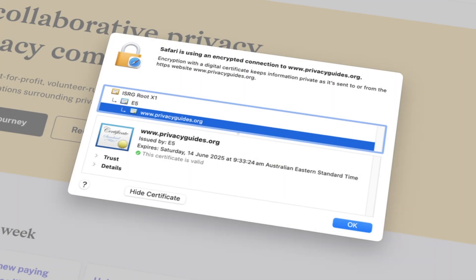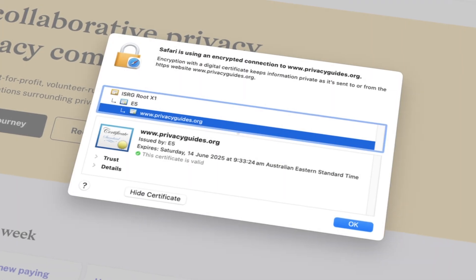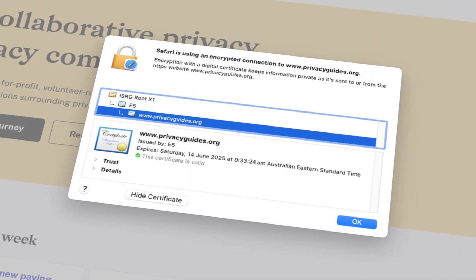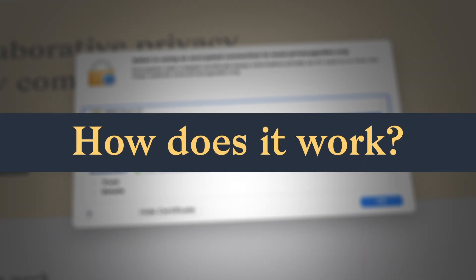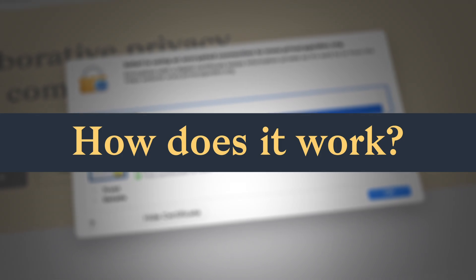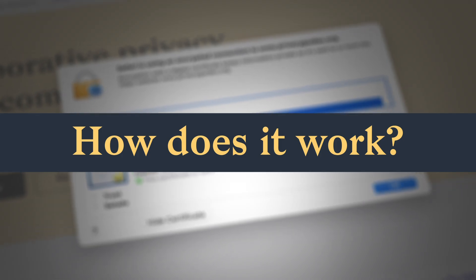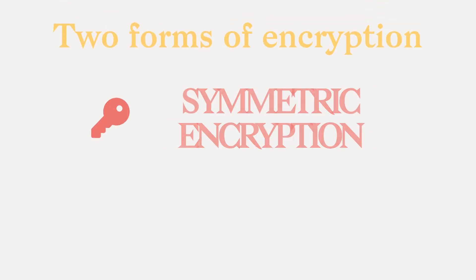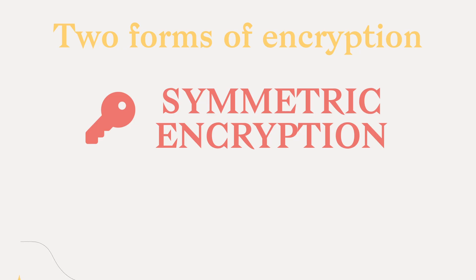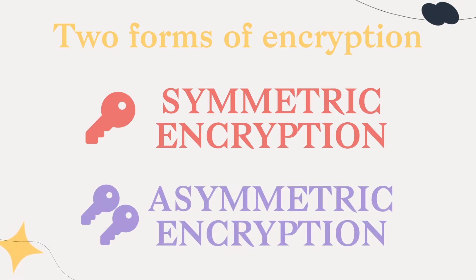Encryption keeps your data secure online, but how does it work? Encryption most commonly takes on two forms: symmetric encryption, where each party holds the exact same key, and asymmetric encryption, which is also known as public key cryptography.